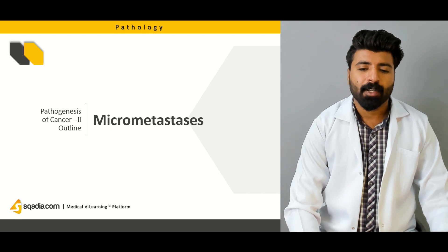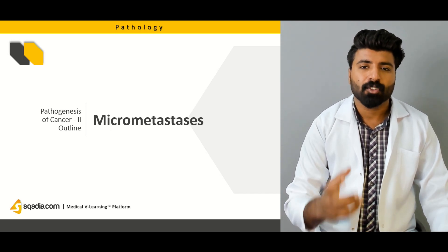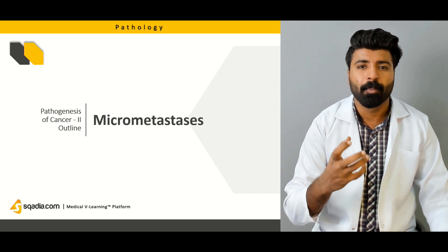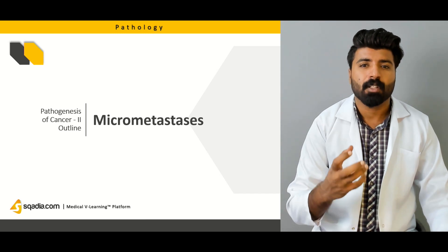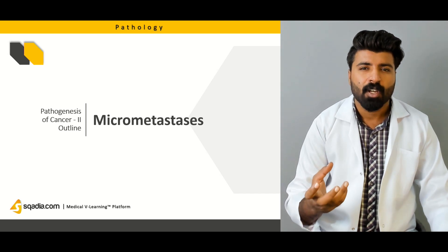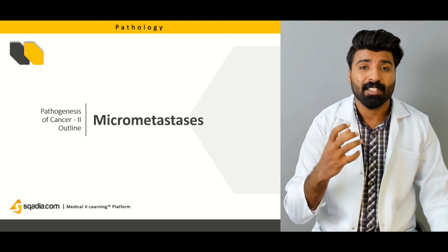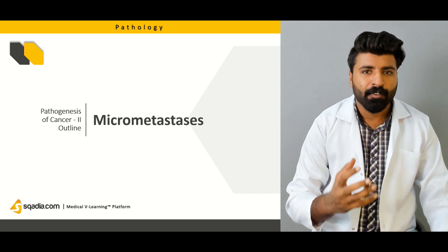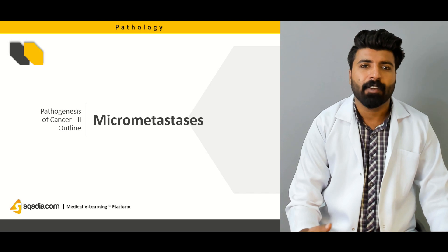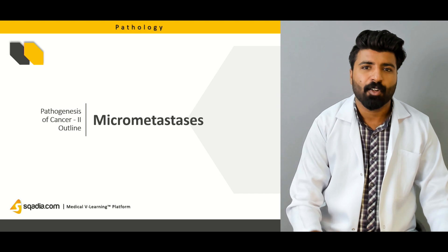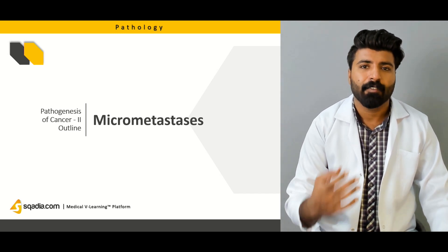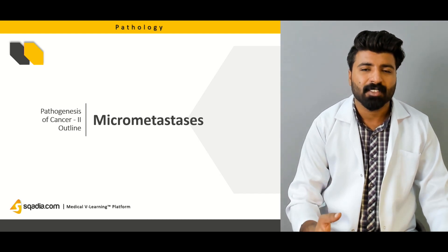We're going to talk about micro metastasis — what it means and its prognosis. We'll discuss how cells go into a quiescence stage, and how after quiescence, if the cell cycle gets activated, they proliferate and become the tumor itself. They can then send off new cells that metastasize to other organs or body parts.